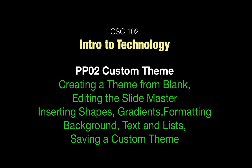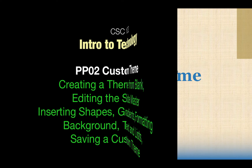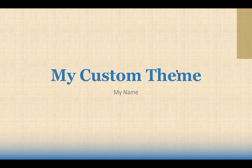Welcome CSE 102 class to exercise PP02. We're going to create a custom master theme by modifying a master slide. We're going to add a custom background, add a custom shape that appears on all slides, format our custom heading, subheadings, and bullet lists, and then save our custom theme — all without using a pre-supplied theme. We're going to create our own.